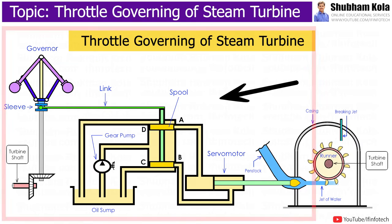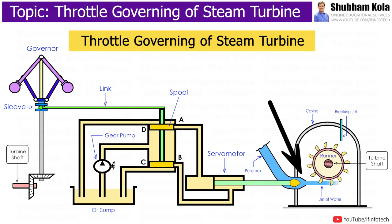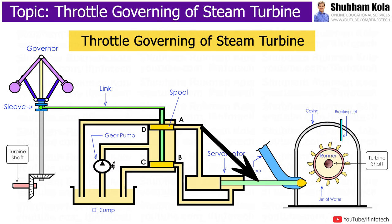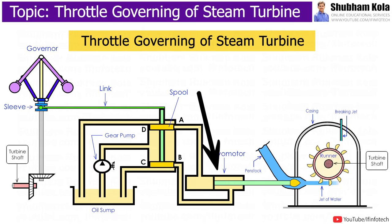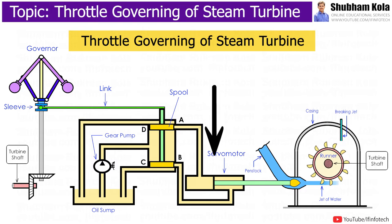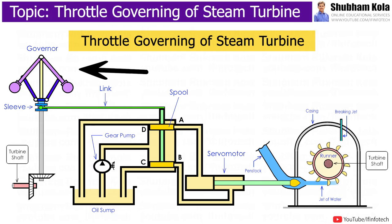In throttle governing, the pressure of steam is reduced and controlled before the steam reaches the turbine. The flow of steam entering into the turbine is restricted by a balanced throttle valve, which is controlled by a centrifugal governor. In the case of small turbines, the throttle valve can be actuated directly with the help of the governor through a linkage.